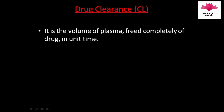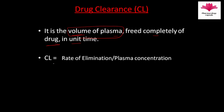What is drug clearance? Drug clearance is the volume of plasma freed completely of drug in unit time. As the name suggests, it is the volume of plasma cleared of drug in unit time. The formula for drug clearance is: rate of elimination divided by plasma concentration.